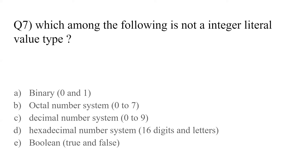Question number seven: which among the following is not an integer literal value type? In every programming language we have number systems like binary (0 to 1), octal (0 to 7), decimal (0 to 9), and hexadecimal (16 digits and letters). The options are binary, octal, decimal, hexadecimal, and boolean (true and false). The answer is E — boolean, true and false, is not an integer literal value type.